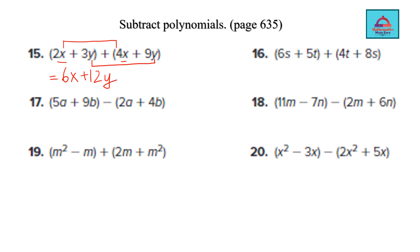So 6s and 8s are like terms, and 5 and 14 are like terms. So 6 plus 8 gives you 14s, and 5 plus 4 gives you 9. These are the like terms, identified by looking at the variable.